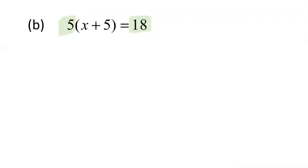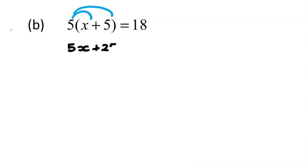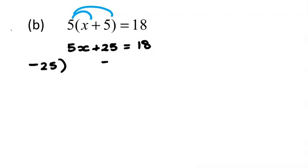Looking at the next question, I think strategy 1 is our best bet — expanding out the bracket means we're only dealing with fractions in the very last line. So let's expand: that gives us 5x + 25 equals 18. We don't need equal signs on the edge because all our equal signs are between the left-hand and right-hand sides. Now subtract 25 from both sides: 5x equals 18 minus 25, which takes us into negative territory — negative 7.